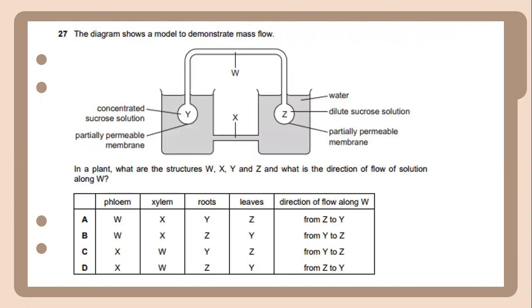Twenty-seven. The diagram shows a model to demonstrate mass flow. In the plant, what are the structures W, X, Y, and Z? And what is the direction of flow of solution along W? The answer will be phloem is W, xylem is X, leaf is Y, and root is Z. And the direction of flow along W is from Y to Z.